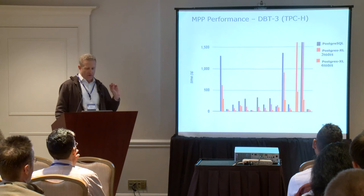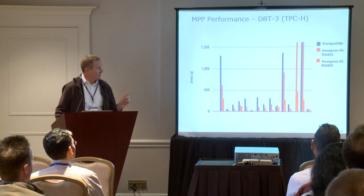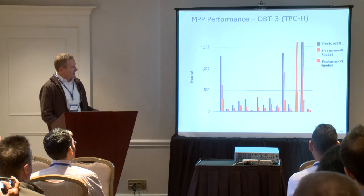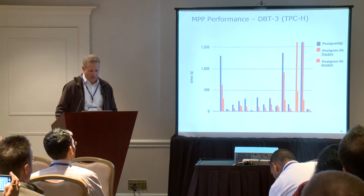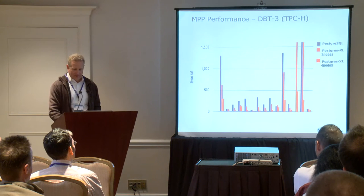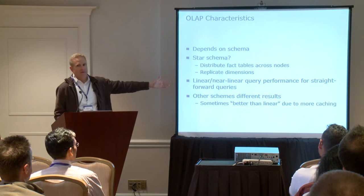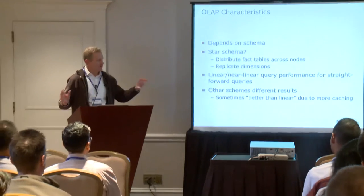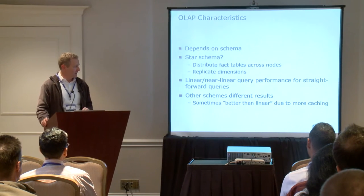There's another benchmark on the OLAP or data warehousing side based on TPCH — this open-source one called dbt3. Comparing against native Postgres, you kind of see as we add more nodes the query time decreases quite a bit. If you have a simple schema like a star schema that's common in data warehousing, you can distribute your fact tables across the nodes and replicate your dimensions, and that actually scales pretty much linearly.